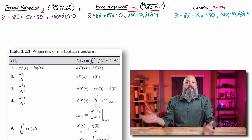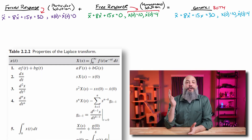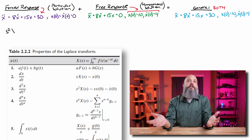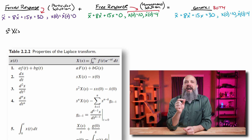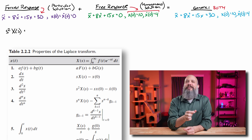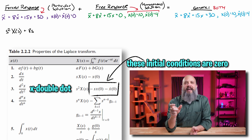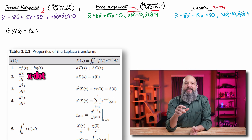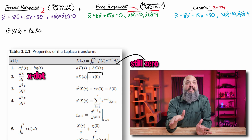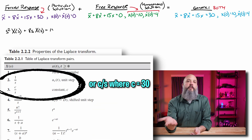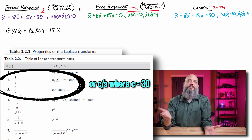Forced response first. Since there are no initial conditions, the forward Laplace transform is very straightforward. All of your time derivatives just become powers of S. So X double dot becomes S squared, your X dot becomes S, the 15X has no S at all, and the 30 on the right-hand side, just the regular number, is one over S. You can see these in the Laplace transform table.